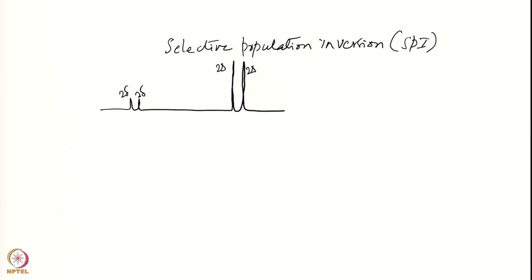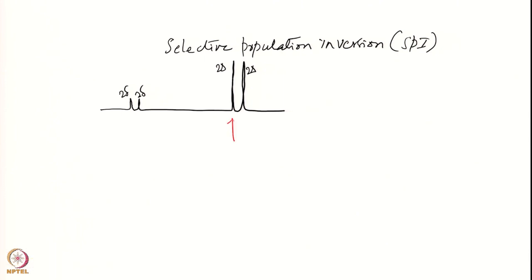We saw that if I do an inversion on one of these transitions — inversion means I apply a selective 180-degree pulse on this particular transition. As a result of this inversion, I will get spectra where the intensity of these two weak lines gets enhanced. So let us say these ones were X1, X2, and these ones are A1, A2. If A1 is inverted, we will get a huge enhancement in the intensity of these signals.